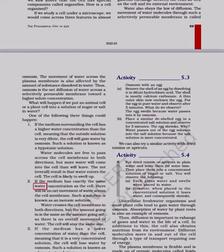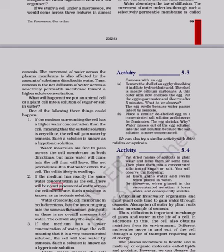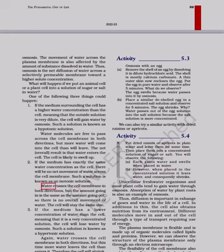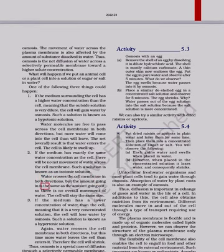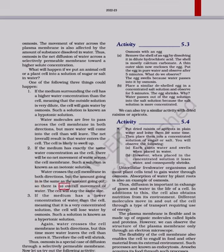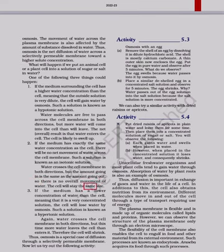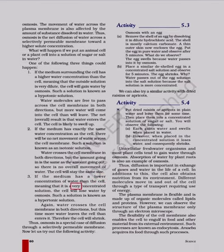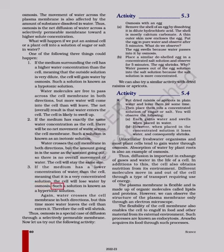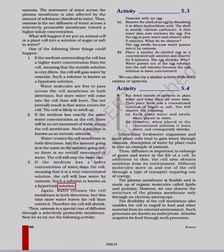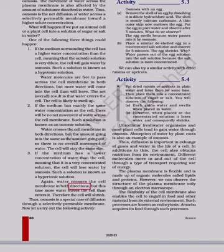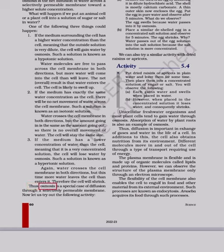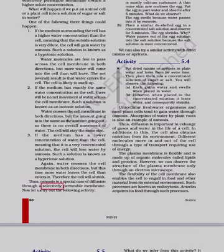If the medium has exactly the same water concentration as the cell, there will be no net movement of water across the cell membrane. Such a solution is known as an isotonic solution. Water crosses the cell membrane in both directions, but the amount going in is the same as the amount going out, so there is no overall movement of water and the cell will stay the same size. If the medium has a lower concentration of water than the cell — meaning that it is a very concentrated solution — the cell will lose water by osmosis. Such a solution is known as a hypertonic solution. More water leaves the cell than enters it, therefore the cell will shrink. Thus, osmosis is a special case of diffusion through a selectively permeable membrane.